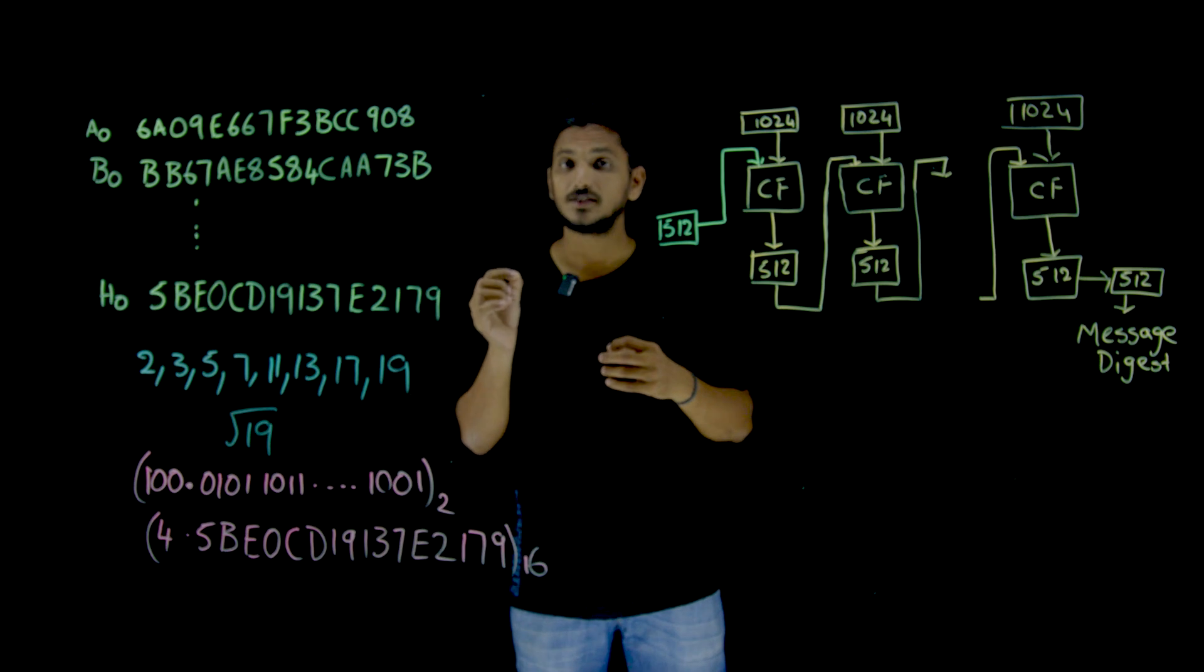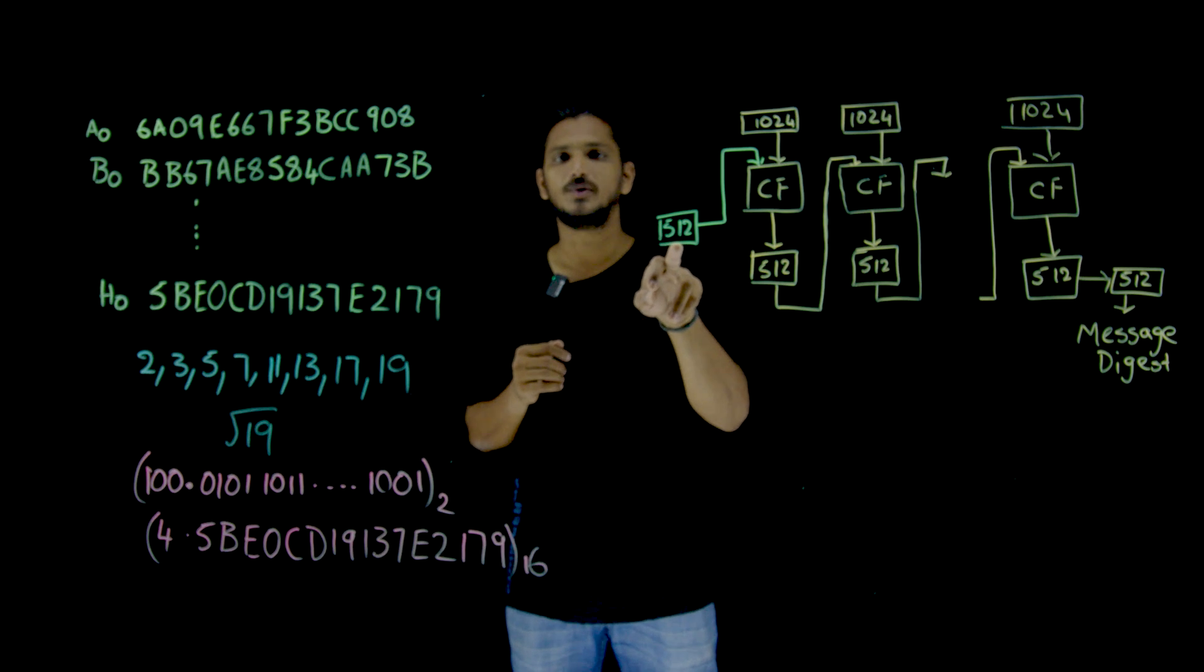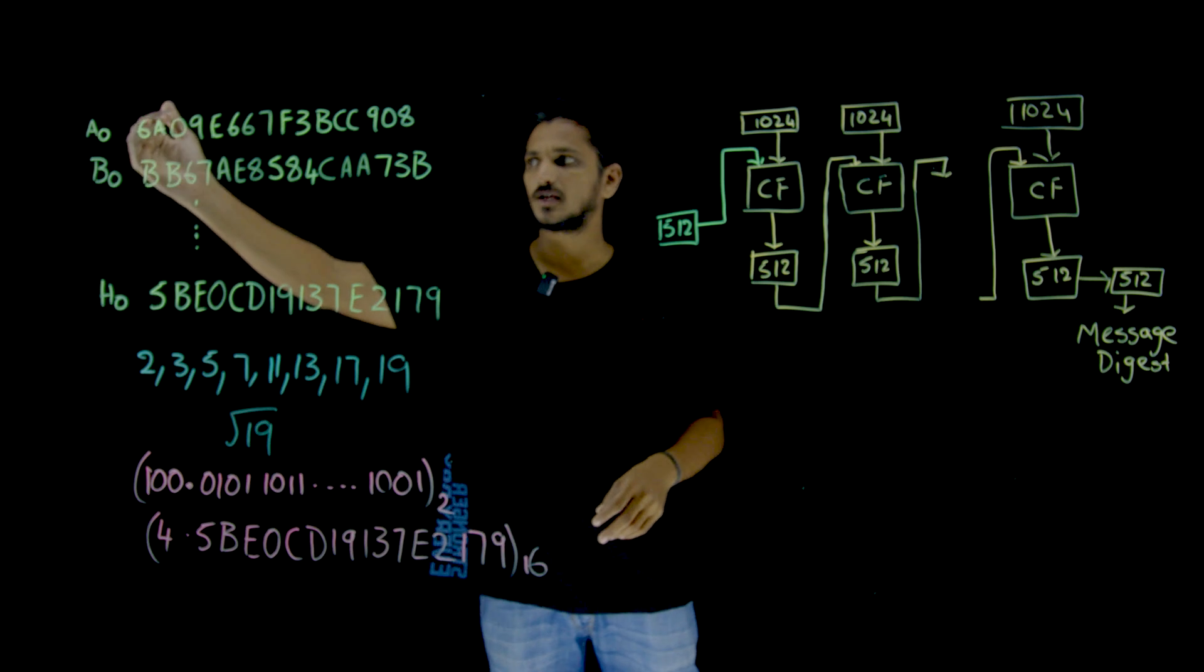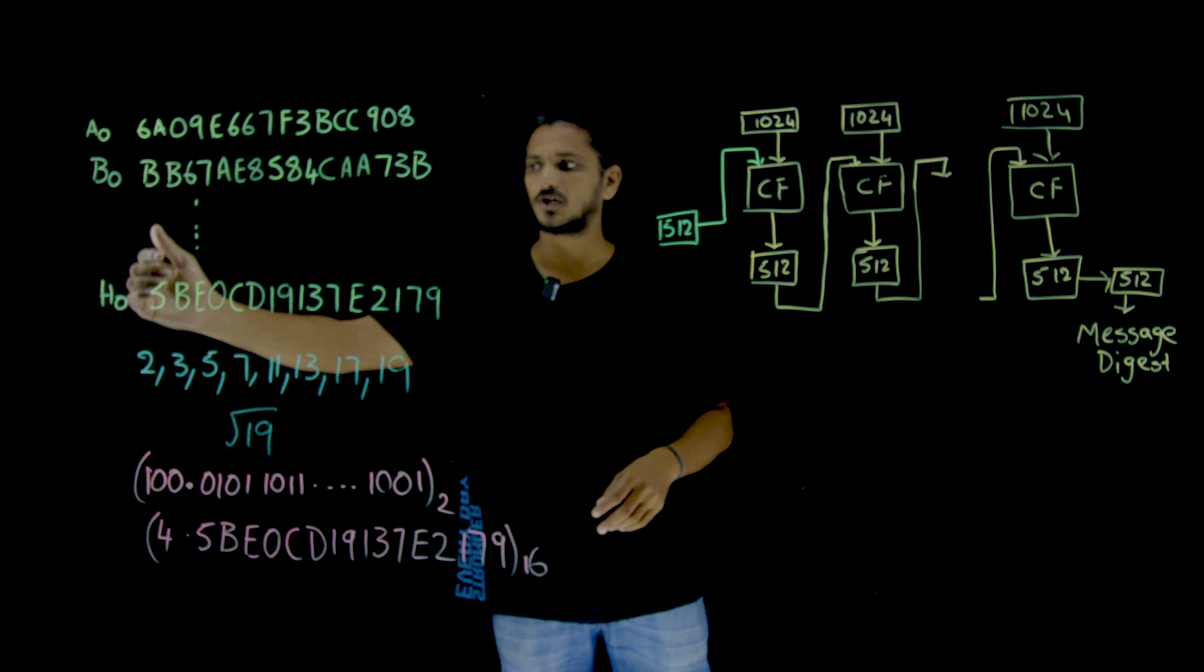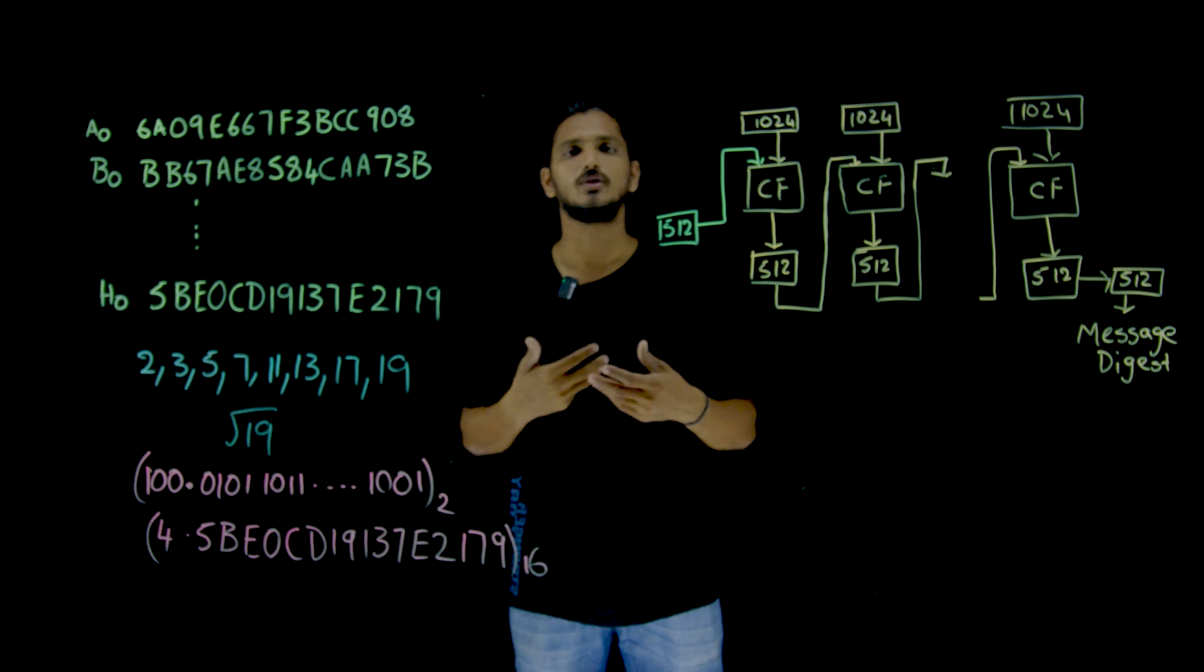Each word is of size 64 bits. Total how many words will be there? 8 words will be there. So the 8 words are A naught, B naught, C naught, D naught, E naught up to H naught. These are the 64 bits which we are going to consider.